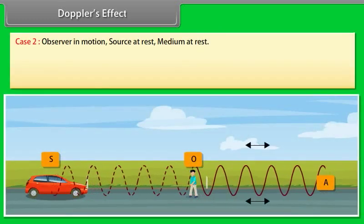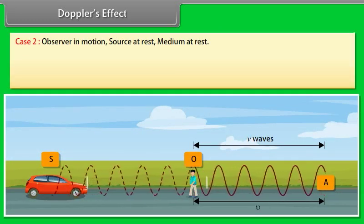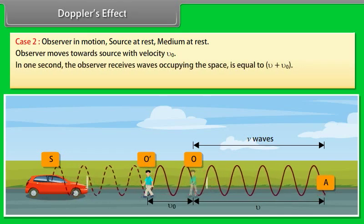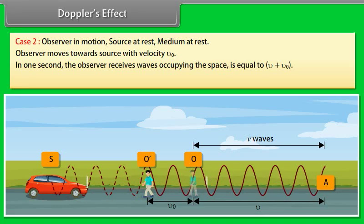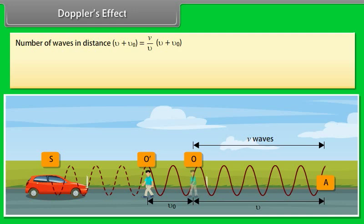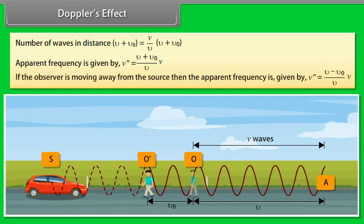Case 2 — Observer in motion, source at rest, medium at rest: The observer moves towards the source with velocity V0. In one second, the observer receives waves occupying space equal to V + V0. Number of waves in unit distance = N/V. Number of waves in distance V + V0 = N × (V + V0) / V. Apparent frequency N'' = ((V + V0) / V) × N. If the observer is moving away from the source, the apparent frequency is N'' = ((V − V0) / V) × N.